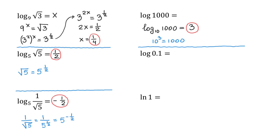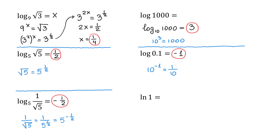In the next example, we will evaluate another common logarithm: the common logarithm of 0.1. If the base is 10, then 10 to what power is equal to 0.1? That would be negative 1, because 10 raised to negative 1 equals 1 over 10 to positive 1, which makes 0.1.